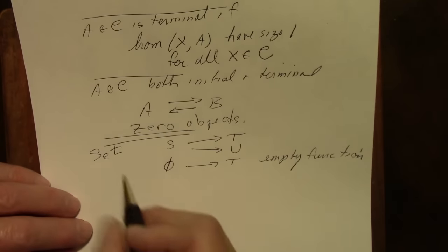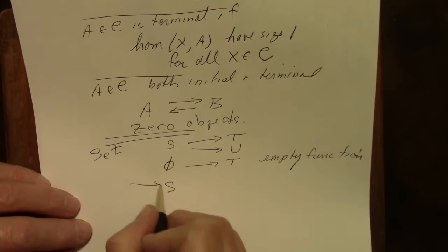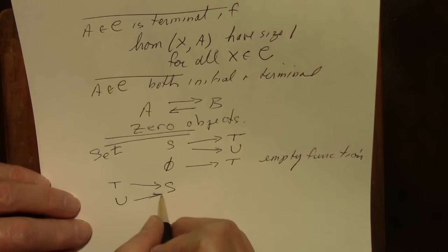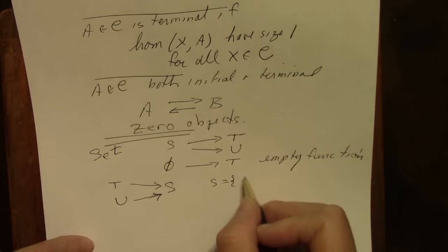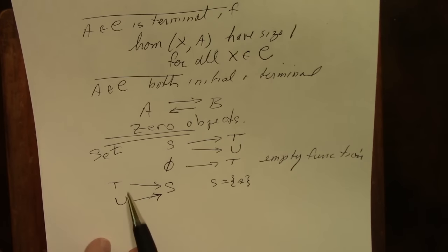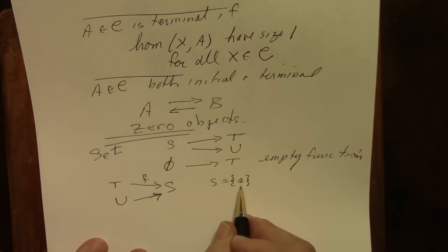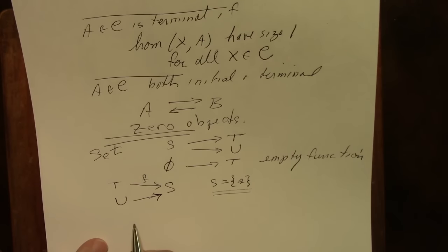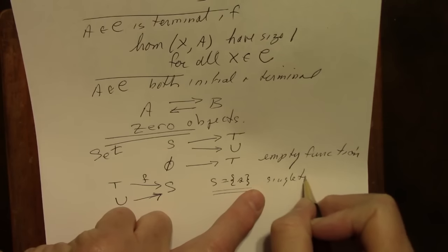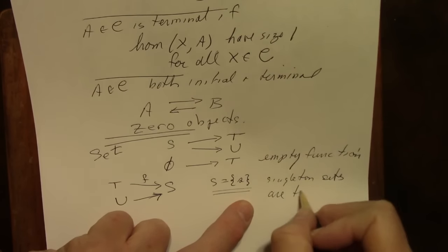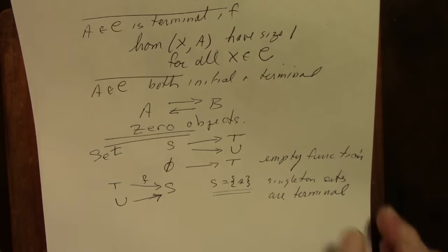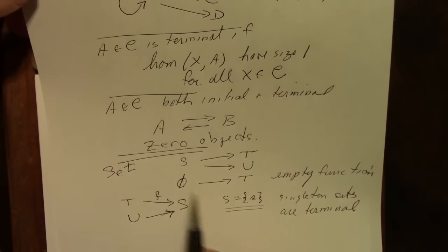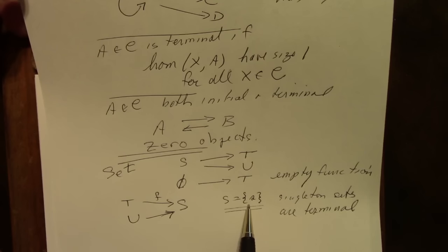What about terminal objects in Set? We're looking at a set S where from any other set there is precisely one set function. Any singleton set will have that property, because a function F will have to map every element in T to the only element in S. So singleton sets are terminal. In Set, there's one initial object — the empty set — and a bunch of terminal objects: every singleton set is a terminal object.